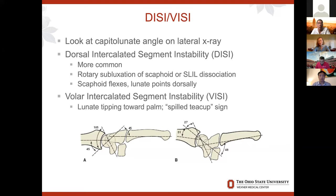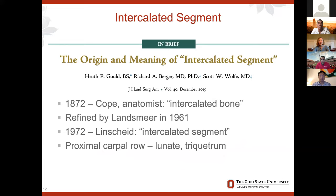Where does this term come from? Borrowing from Dr. Wolf's paper: in 1872, anatomists described the term intercalated bone, refined later by Landsmeer. Linscheid then defined the term intercalated segment as more than one bone, referring specifically to the proximal carpal row — specifically to the lunate and triquetrum, devoid of the scaphoid.